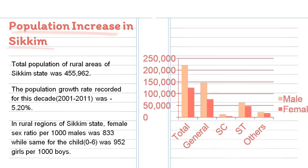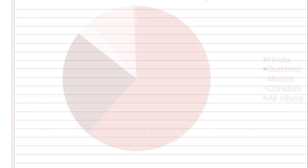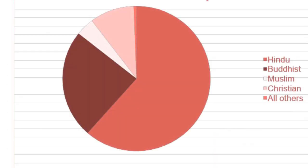Here is a graph showing the population growth rate of males and females based on their caste. Here is a pie chart of religion-wise population in Sikkim. As we can see, the number of Hindus living in Sikkim differs a lot from other religions.